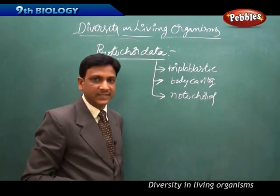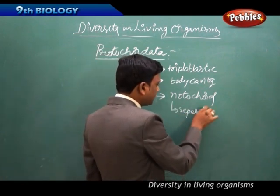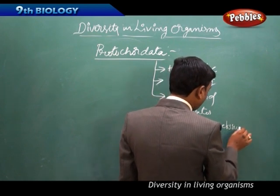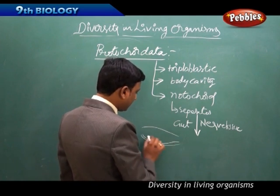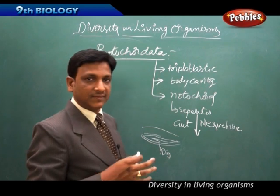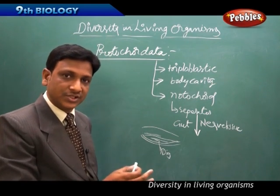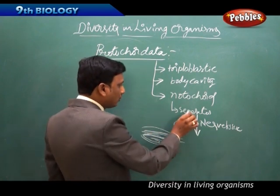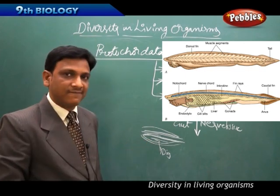The notochord is a string-like structure — 'cord' means string. It separates the gut (digestive system) from the nerve tissue. In lower forms, the digestive part and nervous tissue are not clearly separated, but in Protochordata the notochord separates them. The notochord is not present at all stages of life — only at certain stages.